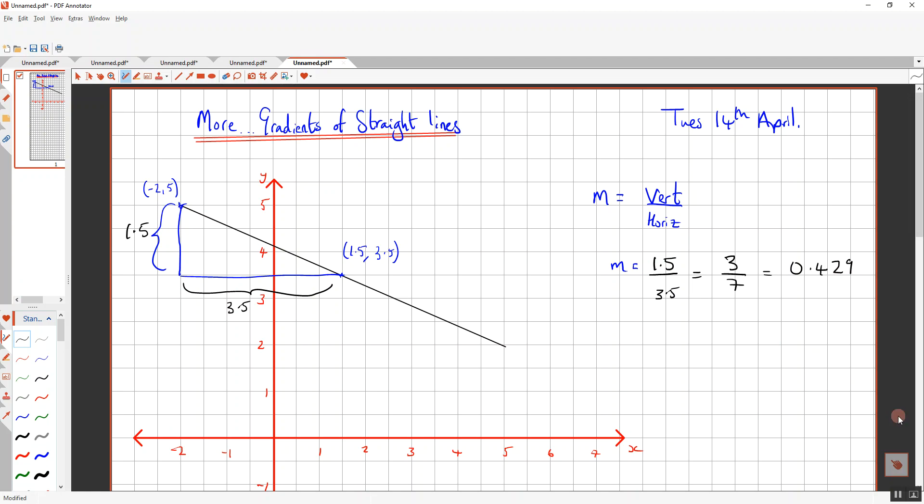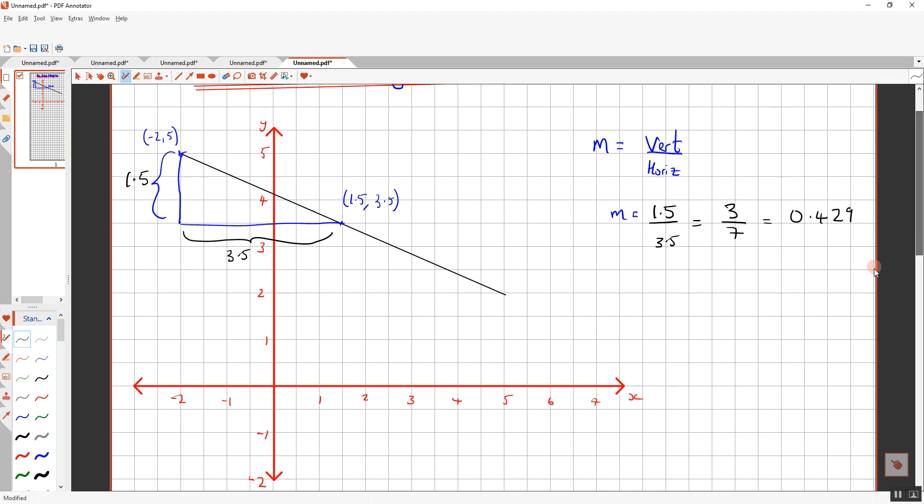Alright, so the question I want you to do is very similar. What is the gradient of the following line that I'm going to put up in just one second? So what I want you to do is, what is the gradient of this line that I have drawn here? I'll label this A. So what is the gradient of line AB?